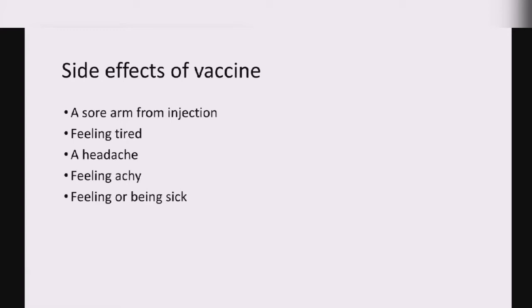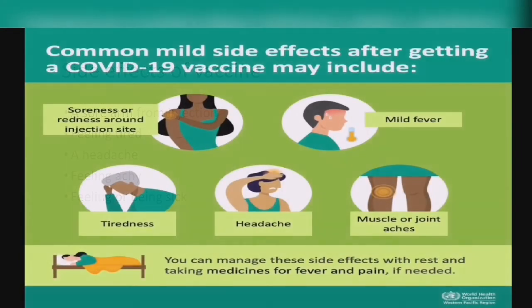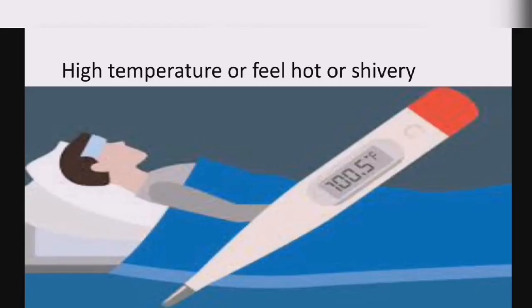The mild side effects that can occur include a sore arm from the injection — pain in the arm on which the vaccine was injected — along with feeling tired, headache, full body pain, and generally feeling unwell. As you can see in the picture, sourness or redness around the injection site, tiredness, headache, mild fever, and sometimes muscle or joint pains can also be seen.